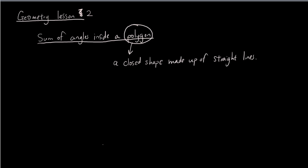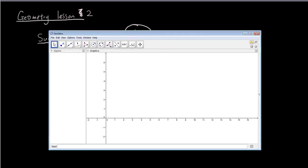And we are still talking about the sum of angles inside a polygon, but this time instead of just doing triangles, we are going to step it up a notch and talk about quadrilaterals. So a quadrilateral is a polygon made up of 4 straight lines, and if I just show you a quadrilateral in GeoGebra...